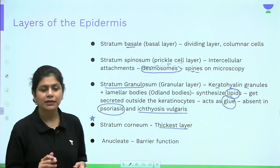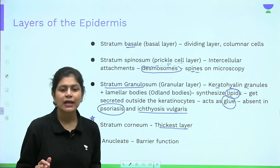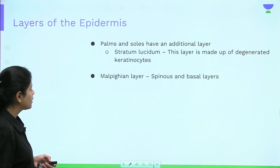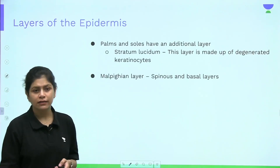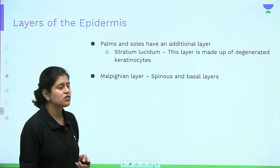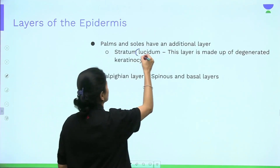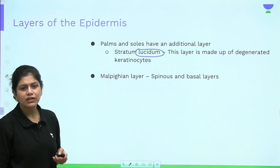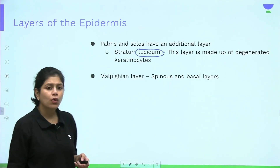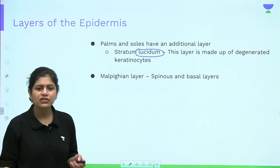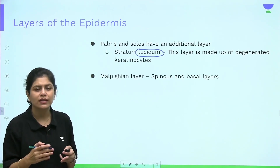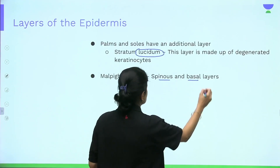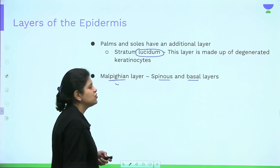The stratum corneum is an anucleate layer responsible for the barrier function of the skin. The palms and soles have an additional layer called the stratum lucidum, which is made up of degenerated keratinocytes. The Malpighian layer refers to the spinous and basal layers together.